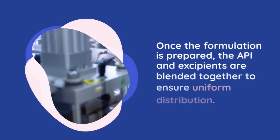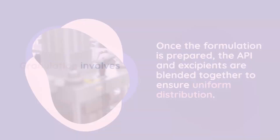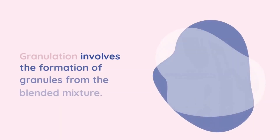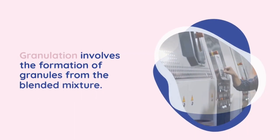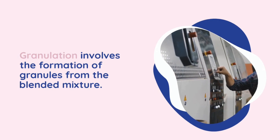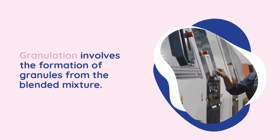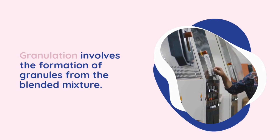Stage 3: Granulation. Granulation involves the formation of granules from the blended mixture. Granules provide better flow properties, improve compressibility, and enhance the uniformity of the final tablet. Granulation can be achieved through various methods such as dry granulation or wet granulation, depending on the characteristics of the formulation.